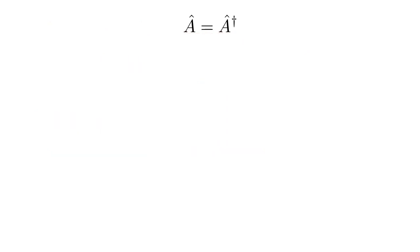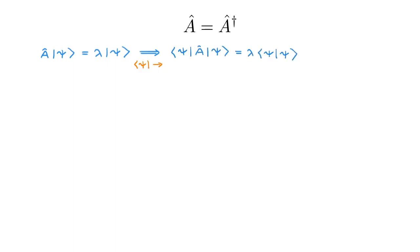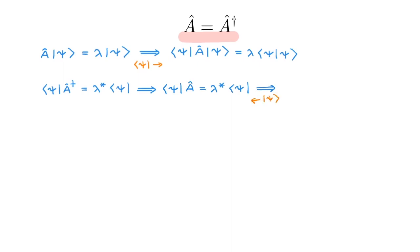Let's start with eigenvalues. The eigenvalue equation is A psi equals lambda psi, where lambda is the eigenvalue and psi the eigenstate. We first act from the right on both sides of this equation with the bra psi. Next, we rewrite the eigenvalue equation in the dual space — the operator becomes A dagger and the scalar becomes the complex conjugate lambda star. If we insist that our operator is Hermitian, we can replace A dagger by A, and then act with the ket psi from the right.